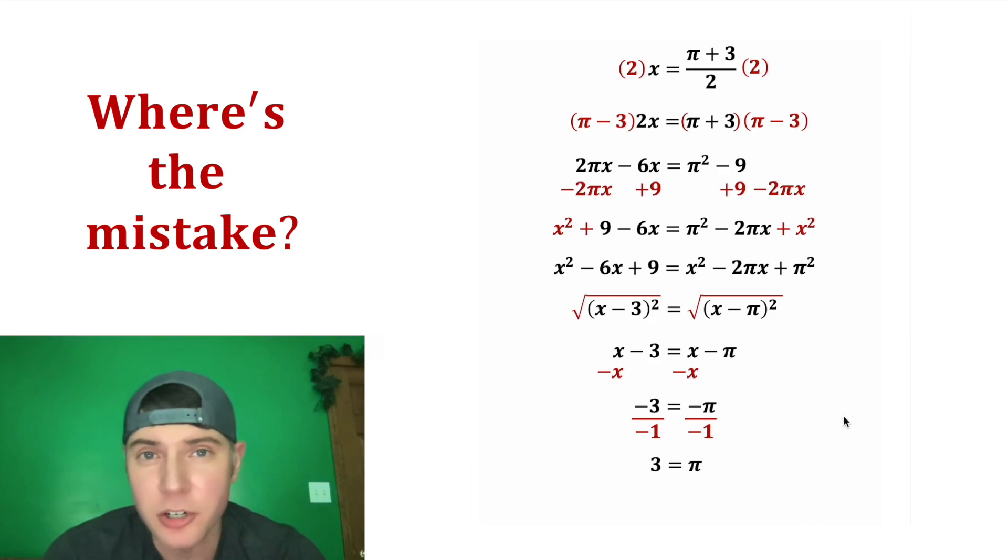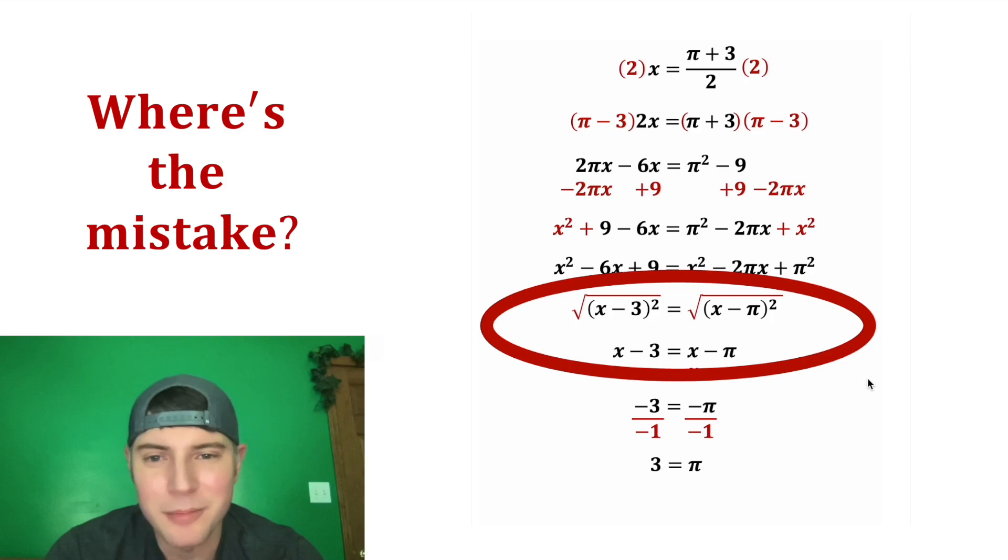The mistake in this occurs right here, going from this step to this step. So the square and the square root don't just cancel out and give you what's in the parentheses. They always give you the positive of what's inside the parentheses. So the correct thing would be to put both sides of the equation in absolute value.